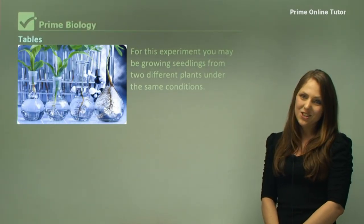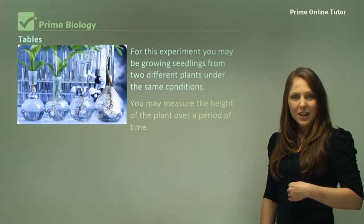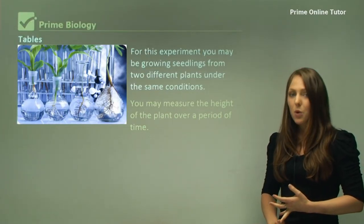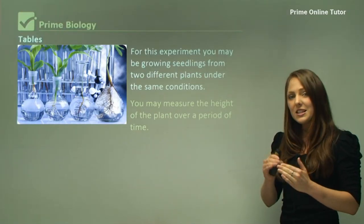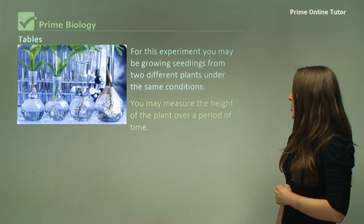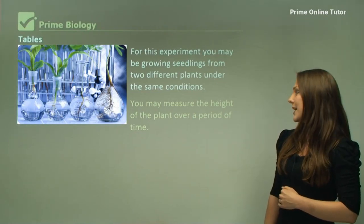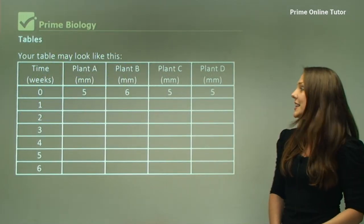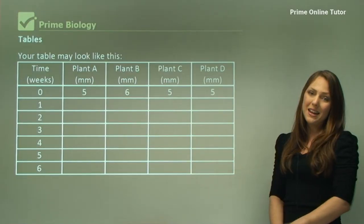When you get into independent and dependent variables, you'll understand. For this experiment, the independent variable is the two different species of plants. You may measure the height of each plant over a period of time.